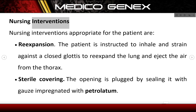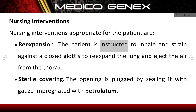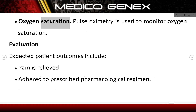Nursing interventions. Nursing interventions appropriate for the patient are: re-expansion — the patient is instructed to inhale and strain against a closed glottis to re-expand the lung and eject air from the thorax; sterile covering — the opening is plugged by sealing it with gauze impregnated with petrolatum; and oxygen saturation — pulse oximetry is used to monitor oxygen saturation.